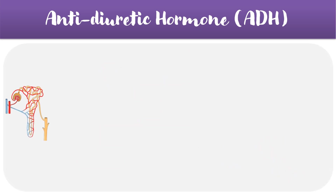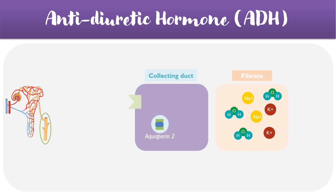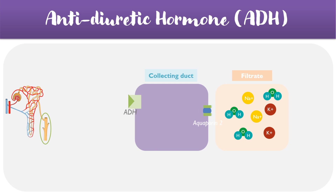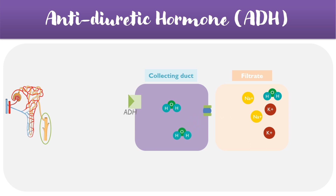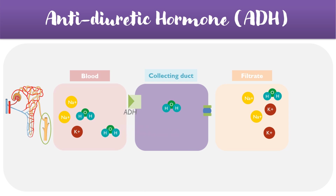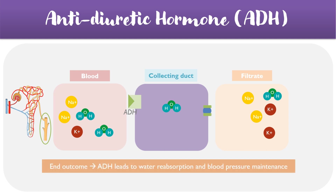For this second effect, we can take a closer look at the collecting ducts to see what's happening at a more cellular level. When ADH binds its receptor on the collecting ducts, it triggers aquaporin-2 channels to fuse with the cell surface membrane. These aquaporin-2 channels allow water to re-enter the collecting ducts from the filtrate back into the ducts. Once inside, these water molecules can be reabsorbed back into the blood via channels on the basolateral side of the membrane, and the overall effect of this process is to increase water reabsorption and therefore maintain blood pressure.